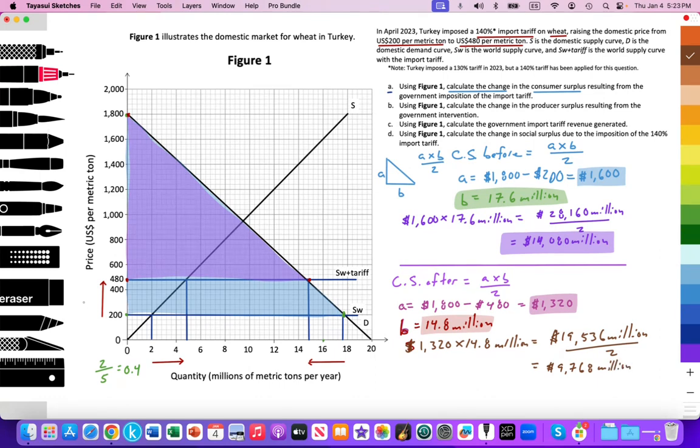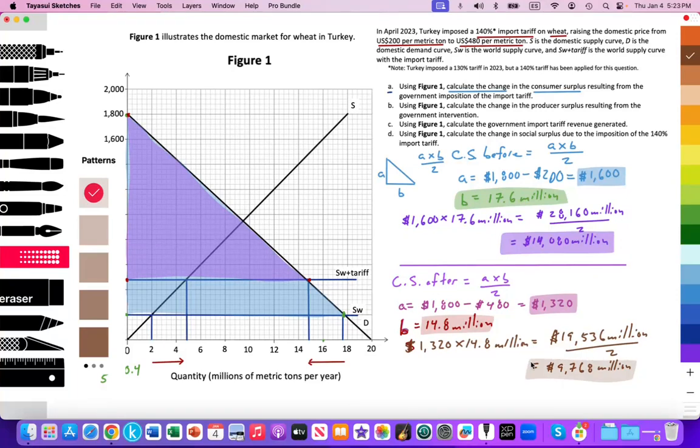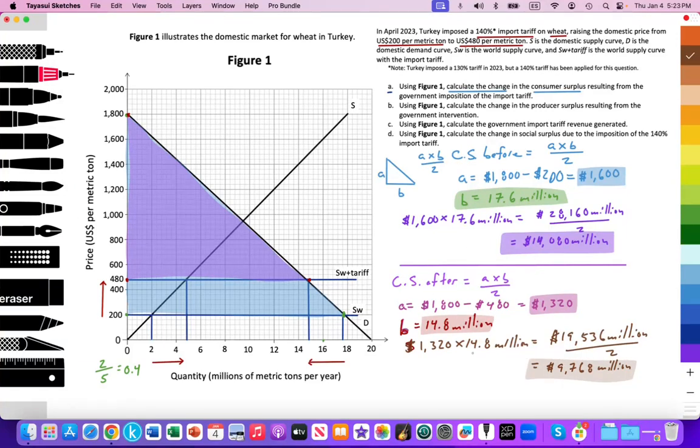I just need to figure out the difference between the two. The change in consumer surplus equals the final value minus the initial value. My final value is right here. My initial value is right here. Let's go ahead and calculate that.